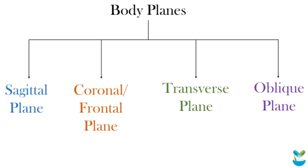Anatomically, the body can be divided into four planes, which are the sagittal plane, cardinal or frontal plane, transverse plane, and oblique plane.